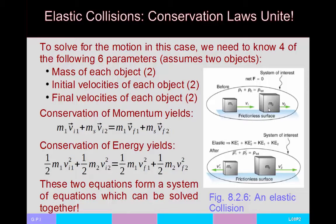For a perfectly elastic collision, there are six parameters: the two masses, the two initial velocities, and the two final velocities. Usually you know the masses and either the initial or final conditions. Being elastic gives you two equations: conservation of momentum and conservation of energy. As long as there's no potential energy change or friction, this system of equations lets you solve for the two final velocities if you know the two initial velocities and masses.